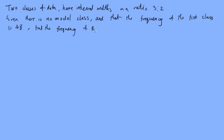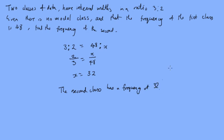So if the width intervals are in the ratio of 3 to 2, that means that the frequencies must be also in the same ratio. So 48 to x. This shows us that 2/3 must be the same as x/48. Then rearranging this, we get x equals 32. So the second class has a frequency of 32. So I hope that helps.